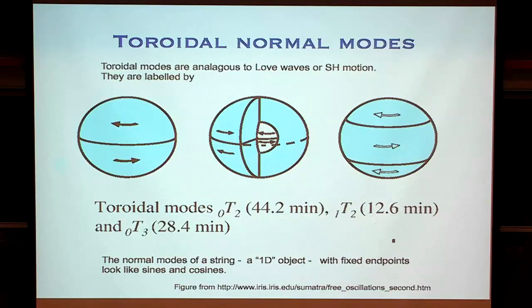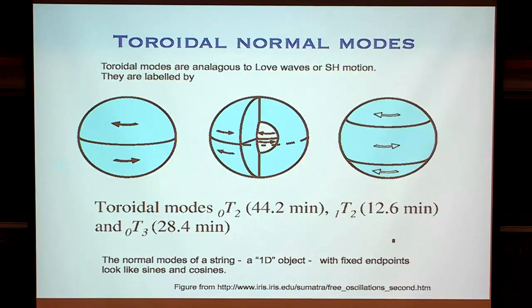The mode 0T3 has an increased angular order L. Now we've got a more complicated twisting: the poles are twisting in the same direction, and the stuff around the equator is twisting in the opposite direction. After they've moved away from their equilibrium position, they twist back again — a more complicated twisting pattern.